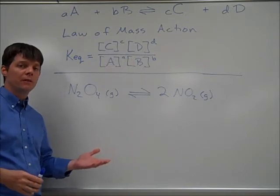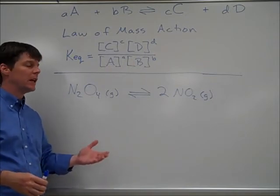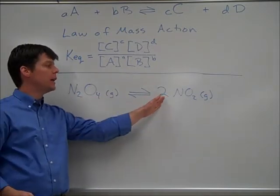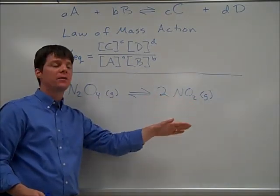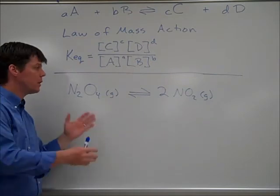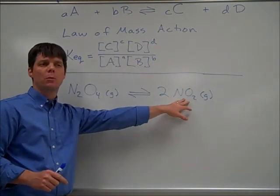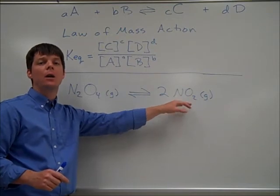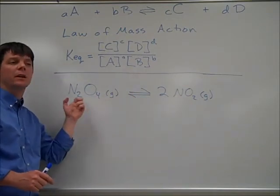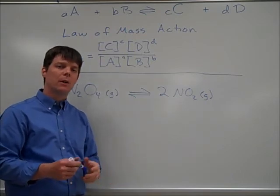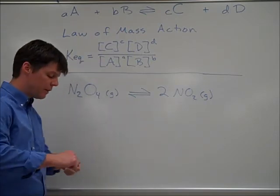One final example of a reversible reaction process is the conversion of dinitrogen tetraoxide into nitrogen dioxide. As this process occurs, it can go either in the forward direction, which is going to produce more nitrogen dioxide. The reverse process is producing the dinitrogen tetraoxide. Once again, let's take a look at writing the equilibrium expression for this reaction process.